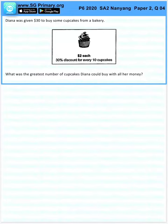Question 4. Diana was given $30 to buy some cupcakes from a bakery. What was the greatest number of cupcakes she could buy with all of her money?